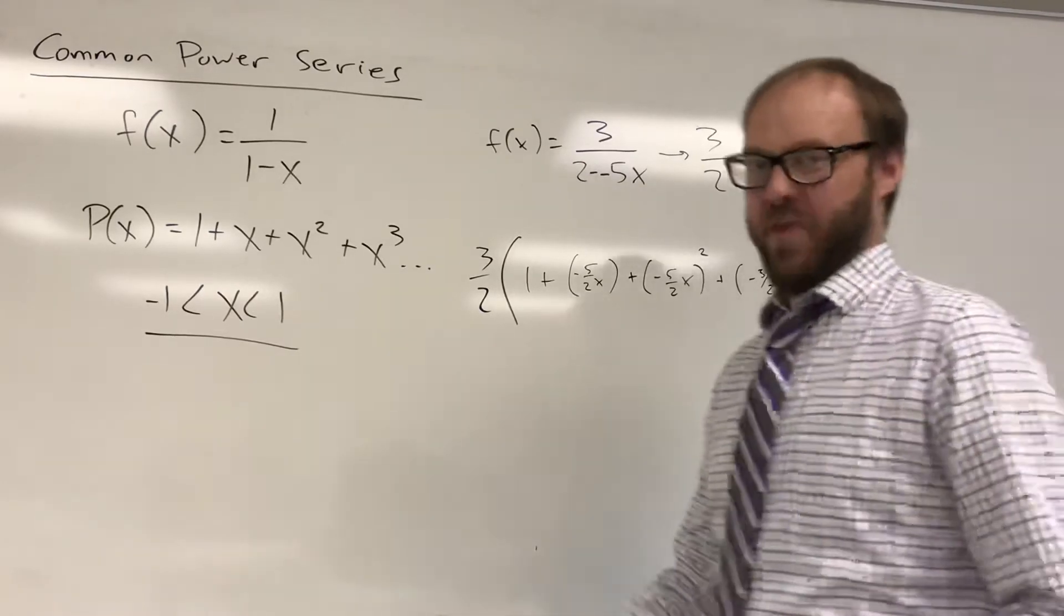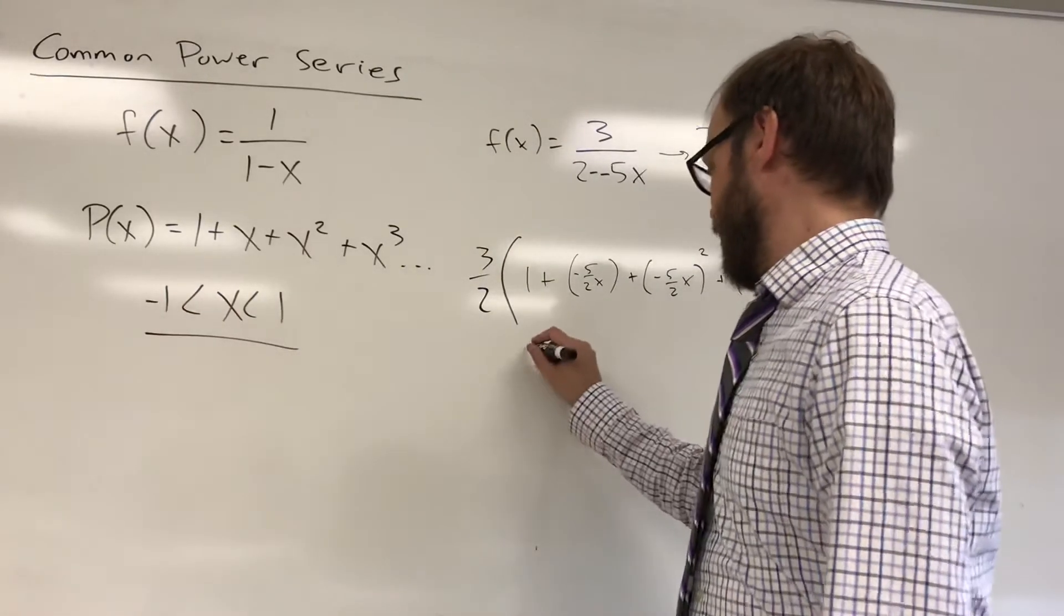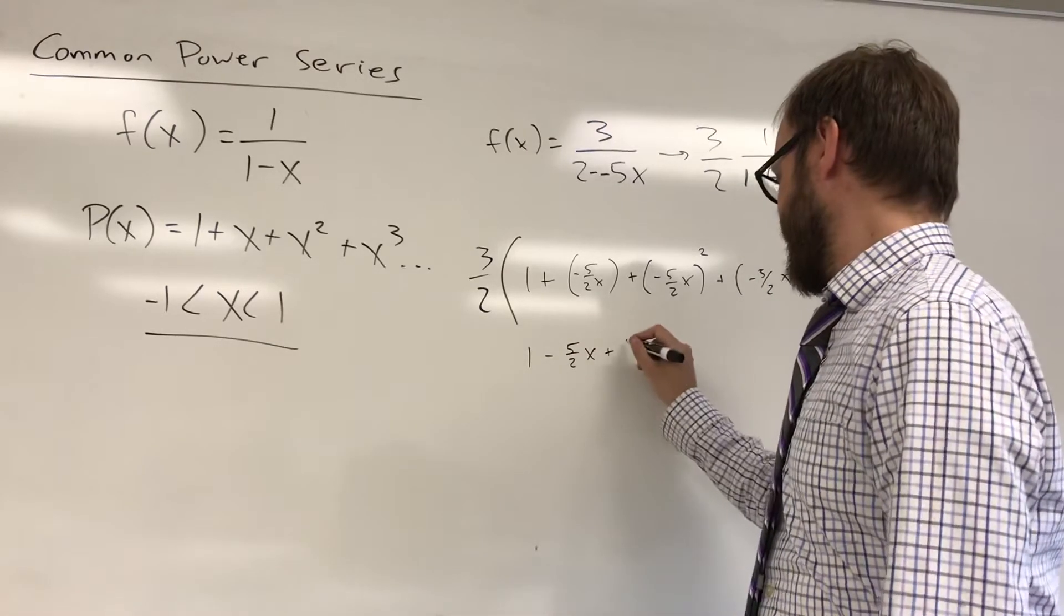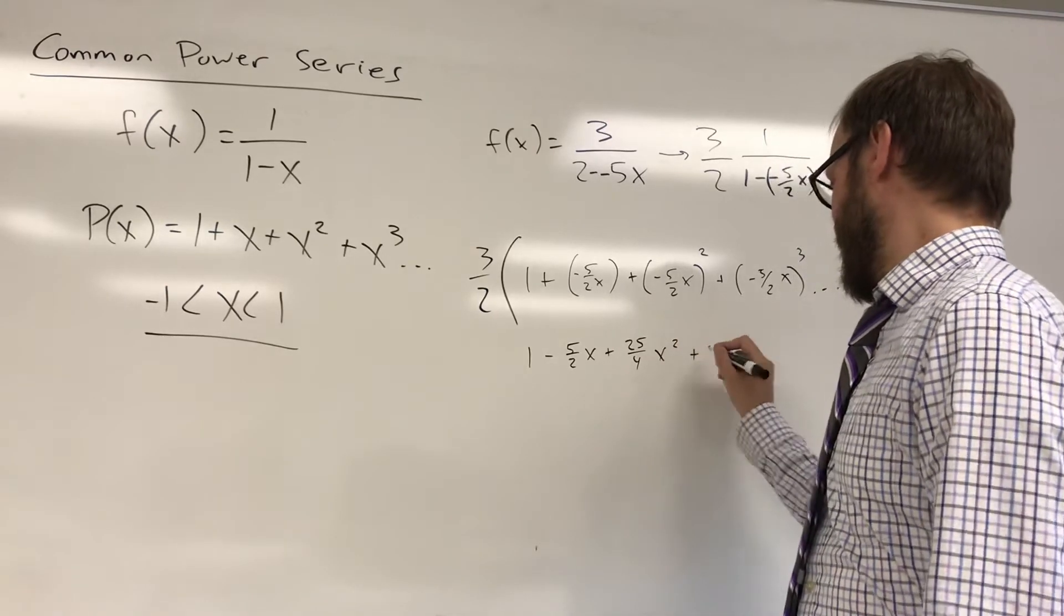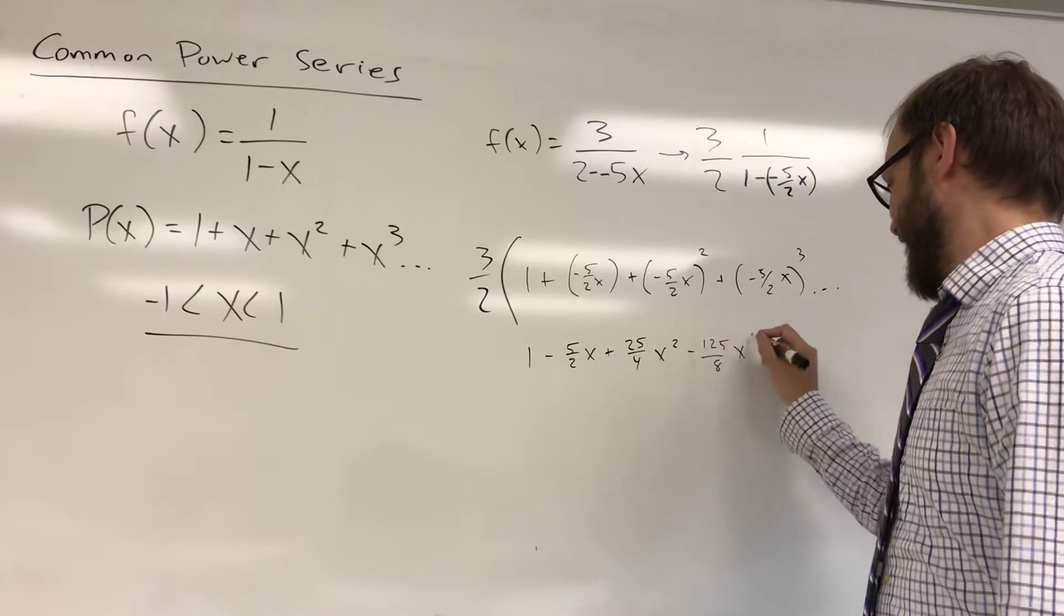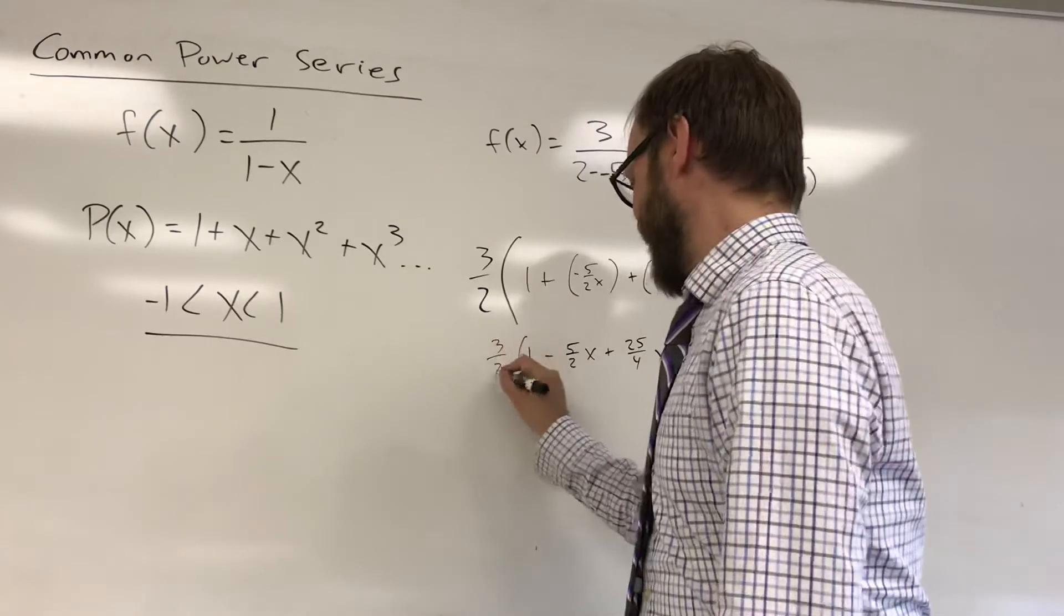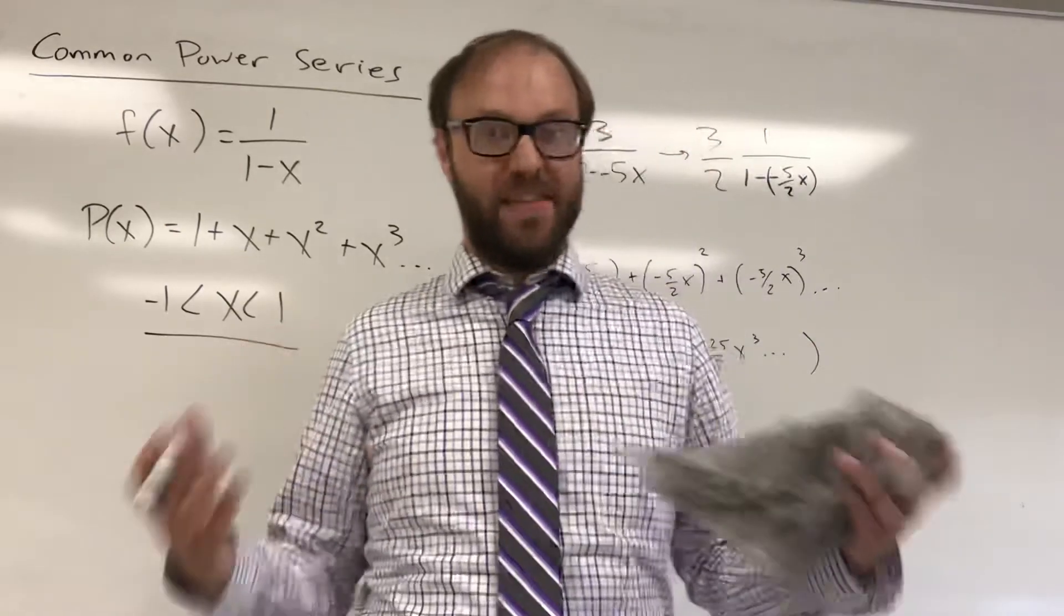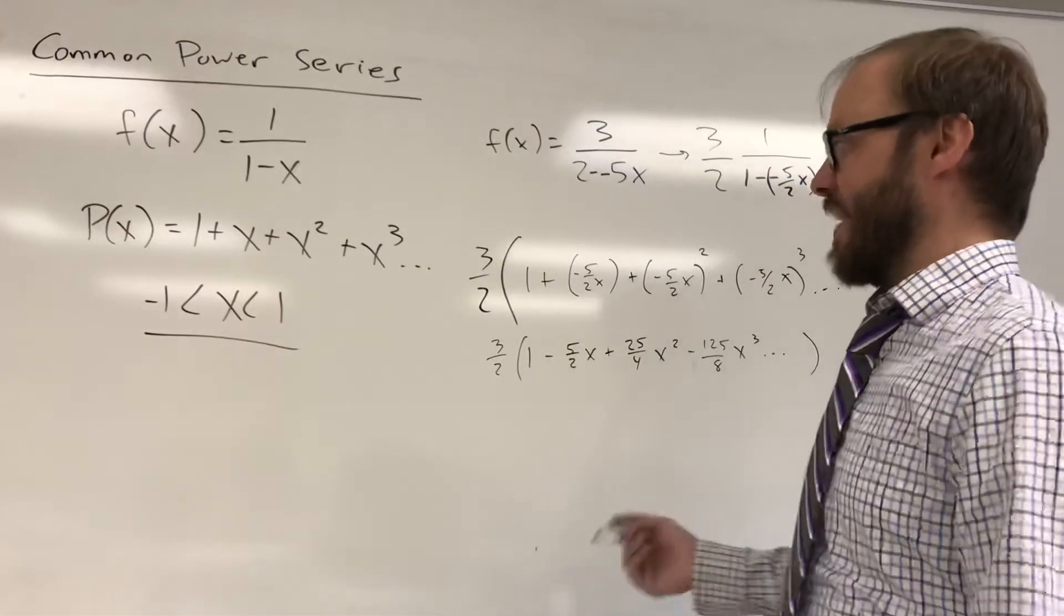And again, this one is intentionally just messy. You're going to end up with 1 minus 5 halves x. That would be plus 25 fourths x squared. That would be minus, that would be 125 over 8 x cubed, and so on. And then that whole thing is being multiplied by 3 halves out in front. So you could distribute that through, and it's going to get real ugly at that point. Not saying this is common. I'm just saying, worst case scenario, this is the way this would work.